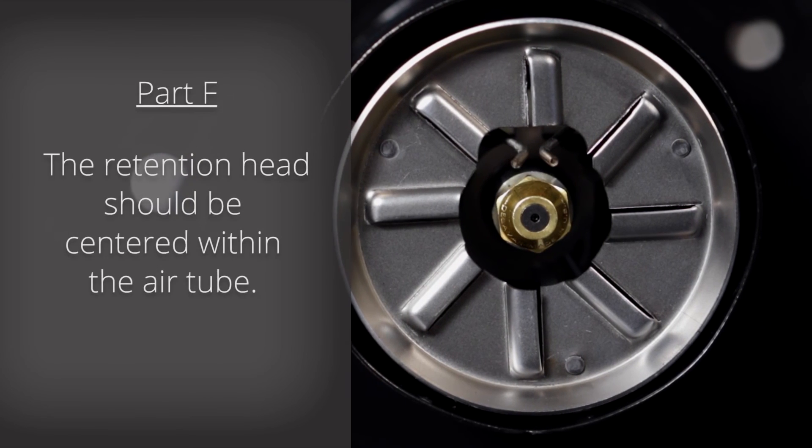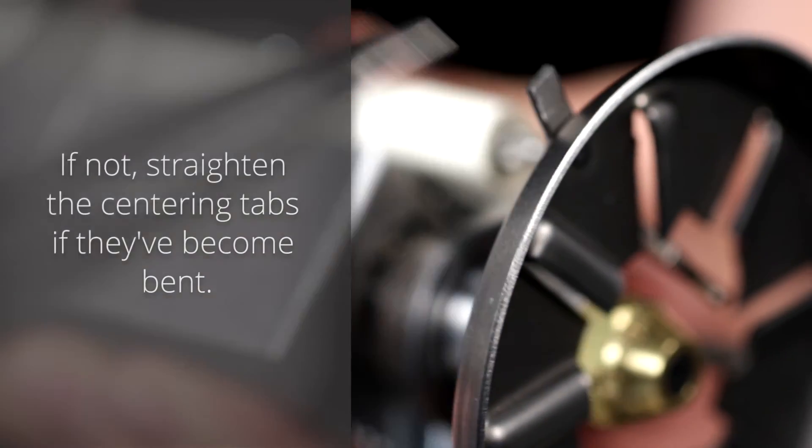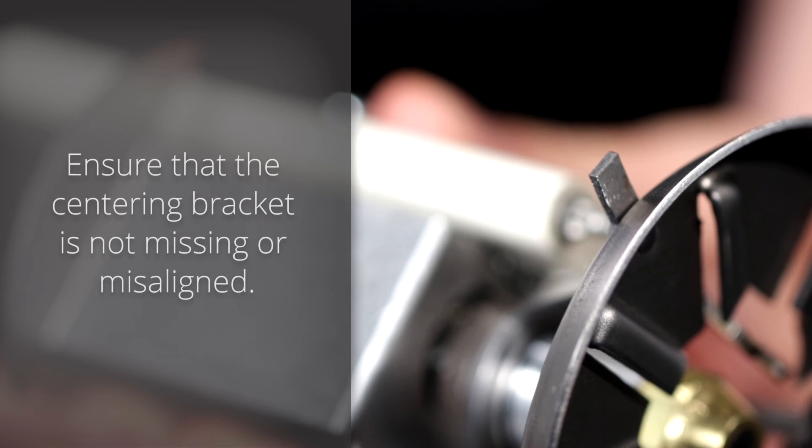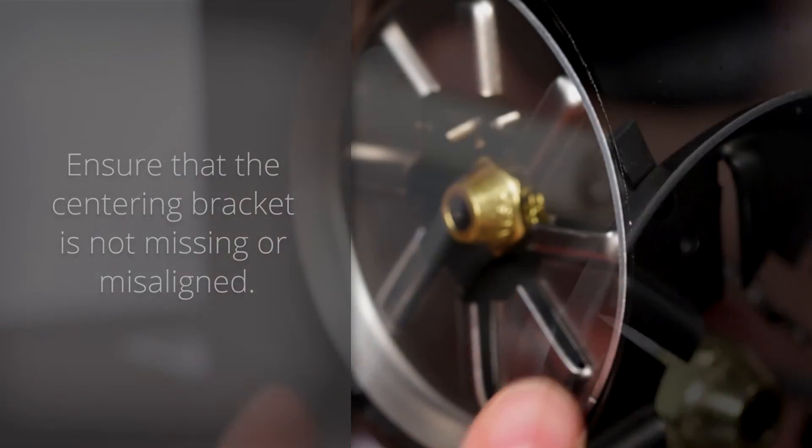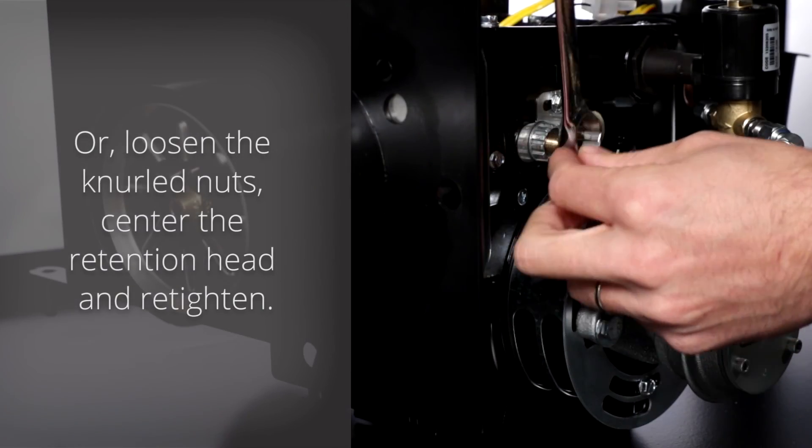Part F: The retention head should be centered within the air tube. If not, straighten the centering tabs if they've become bent. Ensure that the centering bracket is not missing or misaligned. Or, loosen the knurled nuts, center the retention head, and re-tighten if necessary.